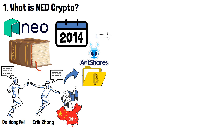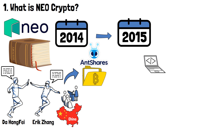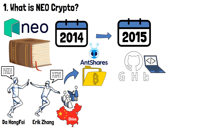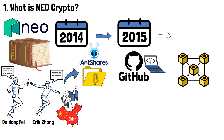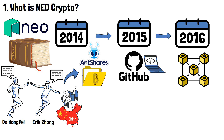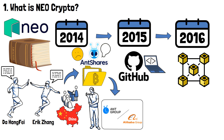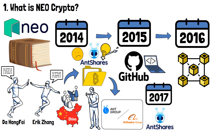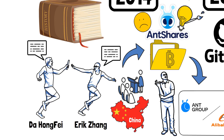A year after its launch, in 2015, the firm published its source code on GitHub, with the mainnet seeing daylight in October of 2016. However, due to brand conflicts and potential confusion with other entities, especially those linked with the Alibaba group, the company rebranded. In 2017, once known as AntShares, the company entered the crypto market under the name of NEO.